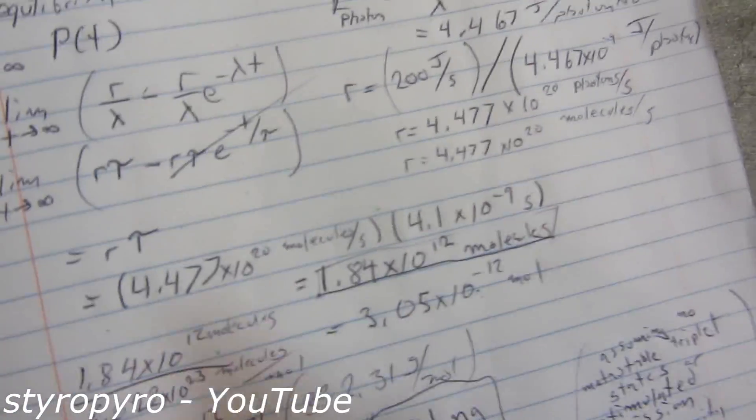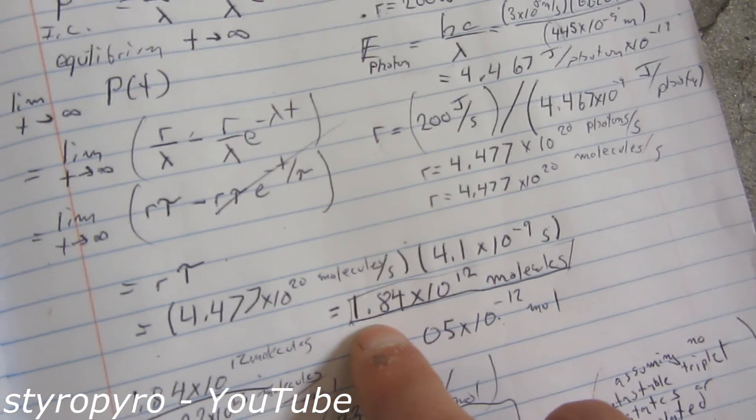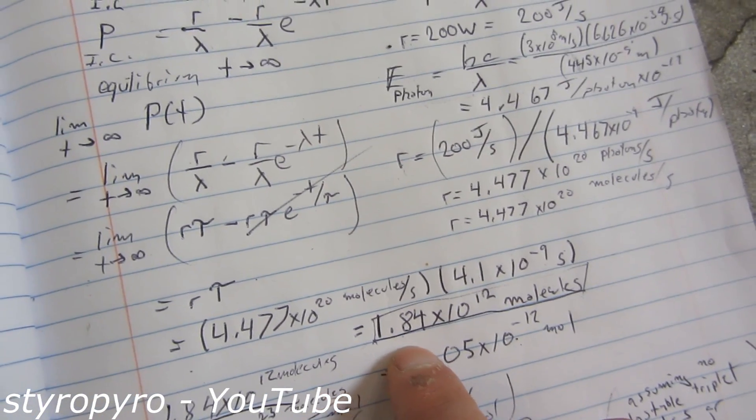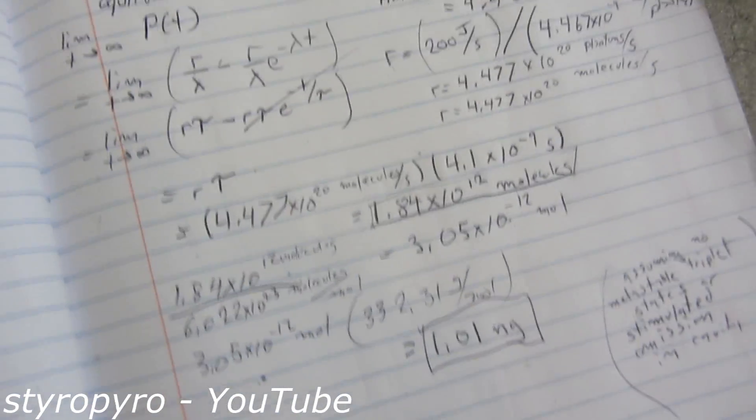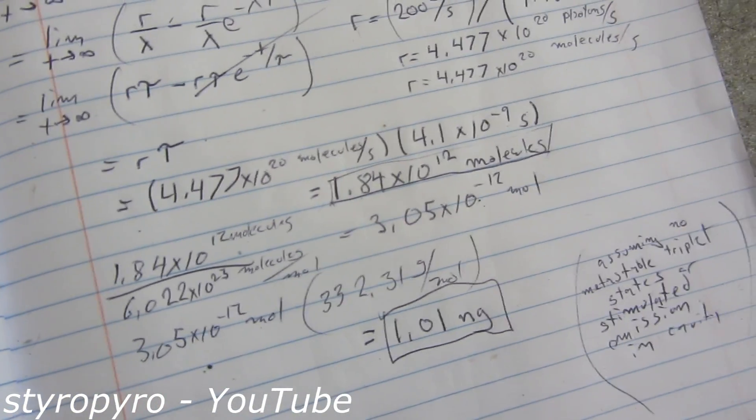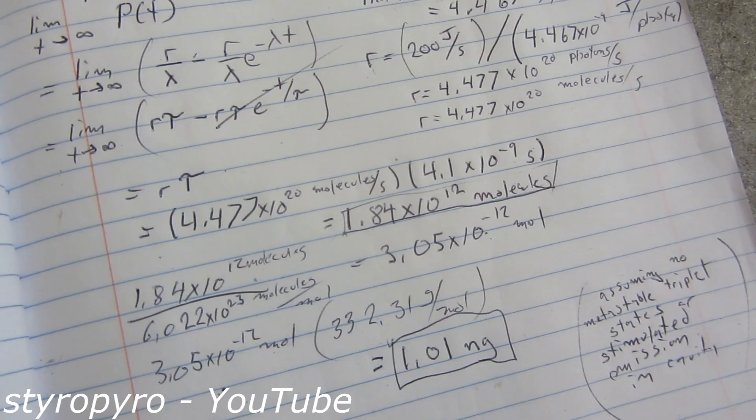And then in the end, you find out that at steady state, you have about 1.84 times 10^12 molecules sitting in the excited state, which is only about one nanogram. So that shows that saturation won't be an issue for this flashlight.